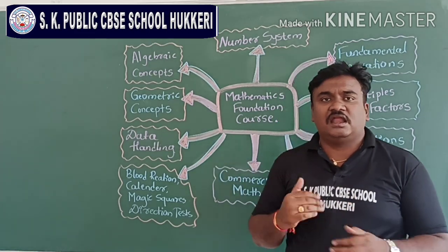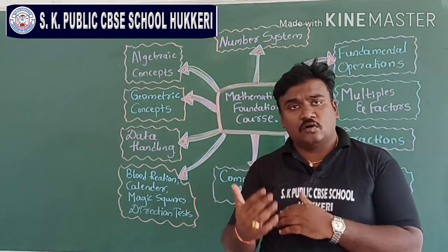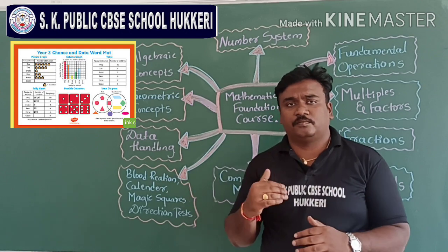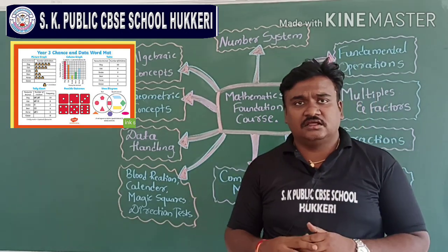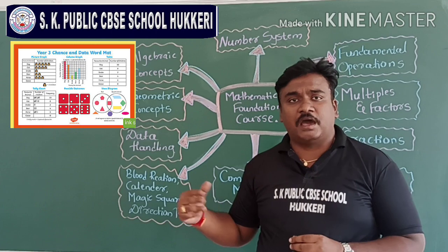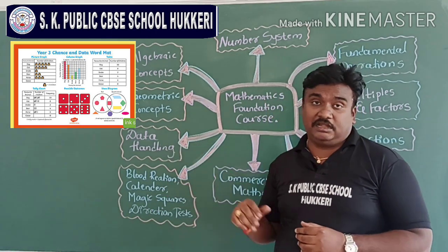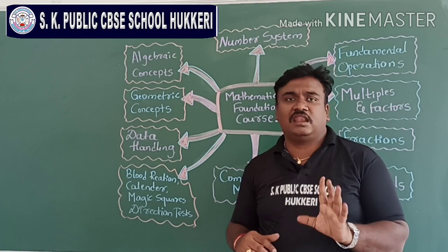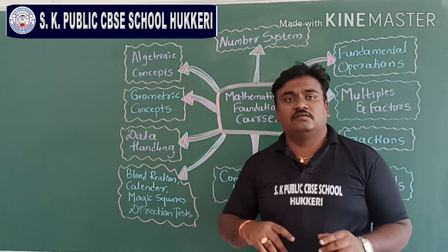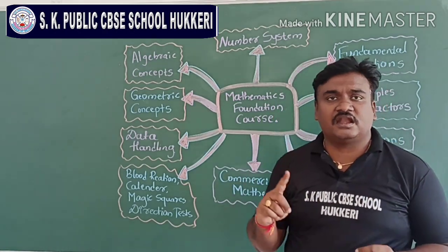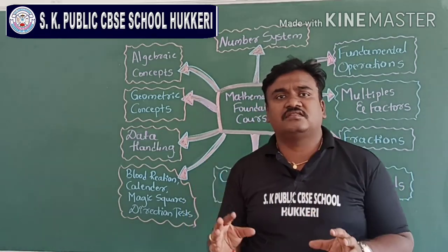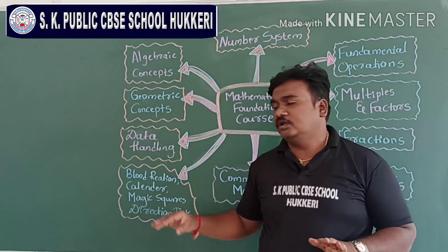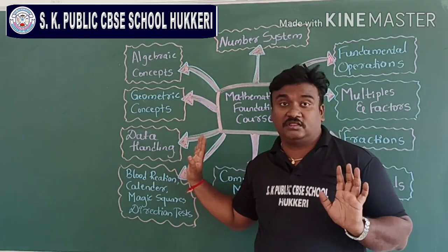Next, data handling. Data handling is also called statistics. Statistics will be covered along with tally charts, pictograms, bar graphs, and probability. Probability is one chapter — if you learn it once, it will be useful for you in 6th standard, 7th standard, and 9th standard. Given that 9th standard also uses the same probability equations and formulas, it is a one-time investment.